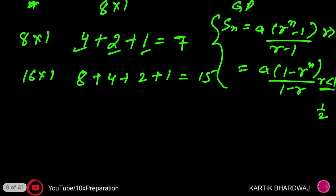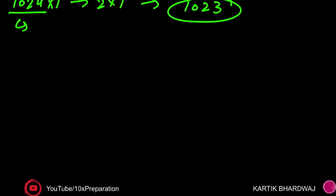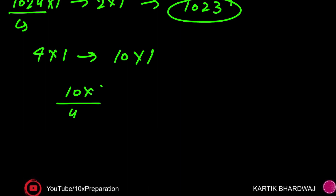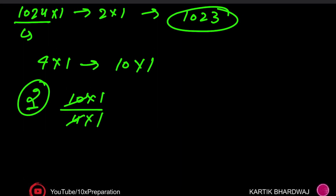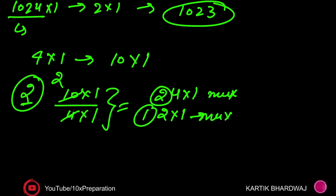For a non-power-of-2 case — say someone asks how many 4x1 MUXes are needed to build a 10x1 MUX — you divide 10 by 4, which gives 2 with a remainder of 2. So you need 2 four-input (4x1) MUXes plus 1 additional 2x1 MUX to handle the remaining 2 inputs. The exact circuit connections will be explained in a later lecture.